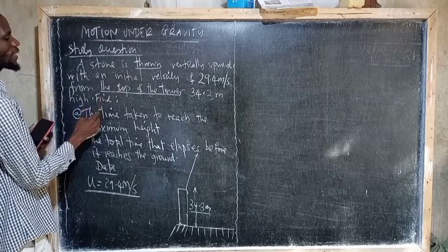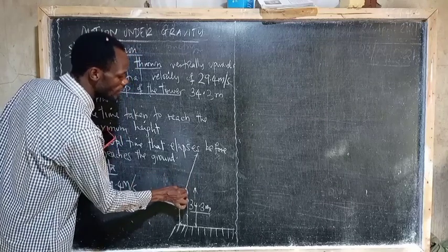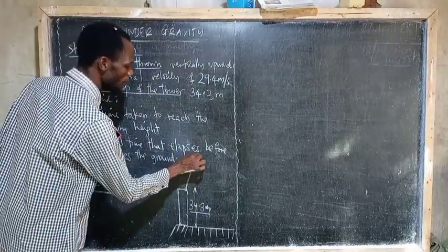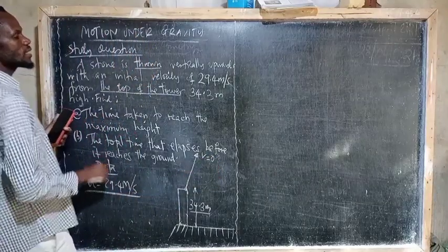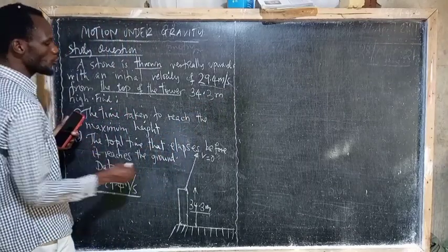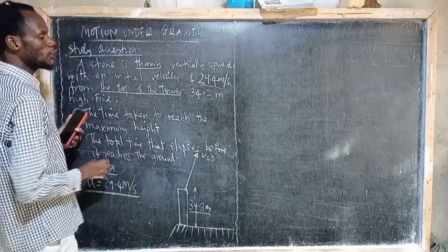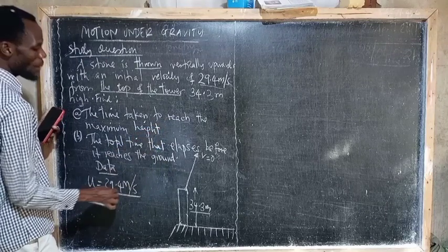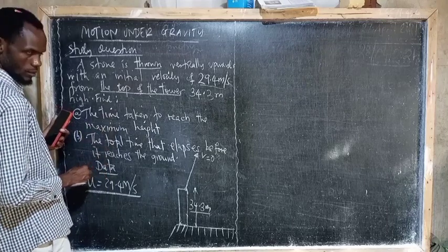The first question is: find the time taken to reach the maximum height. That is the time considered from the point of throwing to the maximum point. At the maximum point, the final velocity is equal to zero, and the initial velocity is 29.4 meters per second. We are looking for the time taken to reach that maximum height. By considering the thrown object, we can calculate the time taken to reach the maximum height.